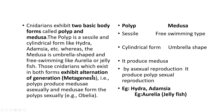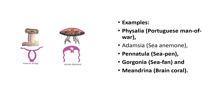This alternation of polyp and medusa forms is called metagenesis — the alternation of generations. Examples of Cnidaria include Physalia (Portuguese man-of-war), Adamsia (sea anemone), Pennatula (sea pen), and brain coral. Obelia is another example.